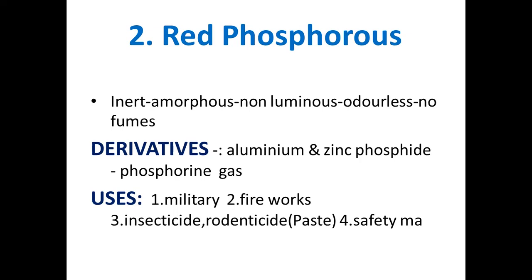Aluminum phosphide and zinc phosphide are also called wheat pills. Phosphorine gas is also derived from phosphorus. Uses of phosphorus include: number one, in the military — in weapons, bombs, and other weapons; number two, fireworks, which is very common these days on special occasions because of its luminosity; number three, as an insecticide or rodenticide (rat killer); number four, safety matches — red phosphorus is used in making safety matches.